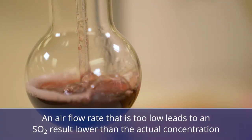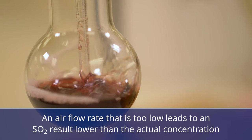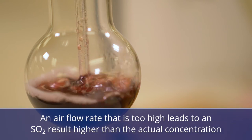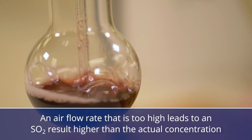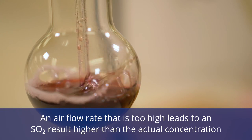If the flow rate is too low, not all the sulfur dioxide will be removed from the sample, giving a result lower than the actual concentration. If the flow rate is too high, droplets and other contaminants can be carried through to the hydrogen peroxide solution, giving a result that is too high.